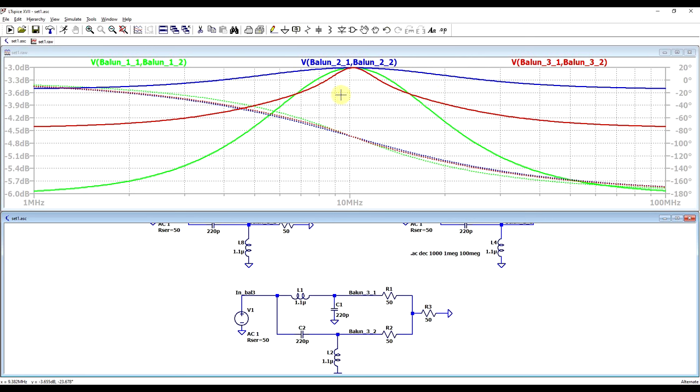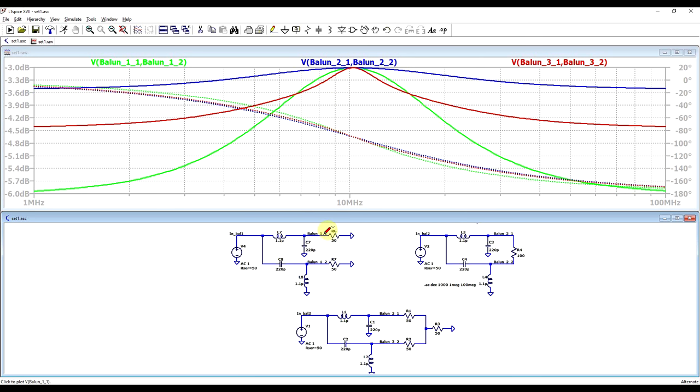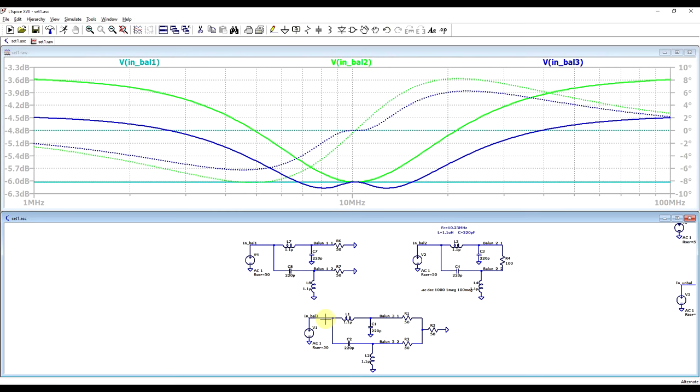Now, at the same time, we can also look at the input of the three circuits, and observe that we are getting exactly minus 6 decibels, with zero degrees of phase shift, at the same 10.2 megahertz frequency. So all the circuits are impedance matched to the signal source. Again, a similar behavior, at different frequencies, we are getting different results.